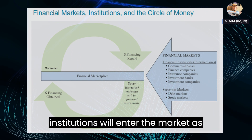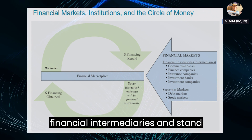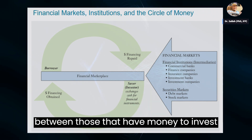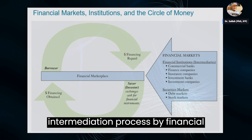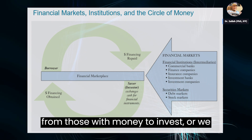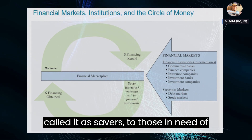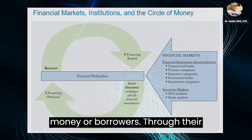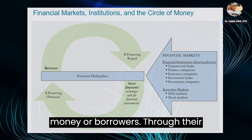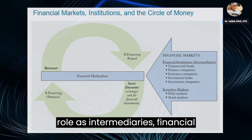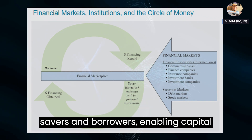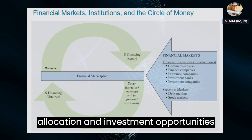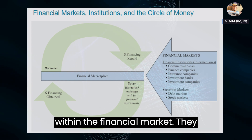The financial institutions will enter the market as financial intermediaries, and stand between those that have money to invest and those that need money to lend. This intermediation process efficiently channels funds from those with money to invest — or savers — to those in need of money — or borrowers. Through their role as intermediaries, financial institutions bridge the gap between savers and borrowers, enabling capital allocation and investment opportunities within the financial market.